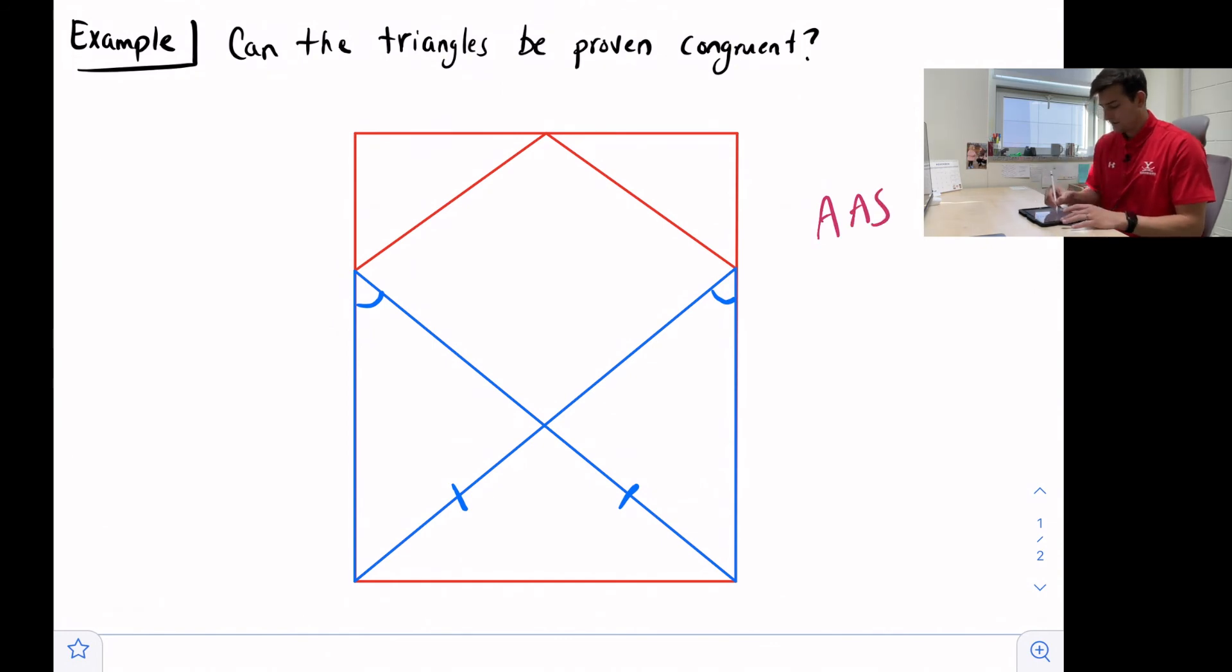Well, if we look at this diagram, we notice here in the middle we have this X intersection. What is formed there are what are called vertical angles, and vertical angles are congruent.